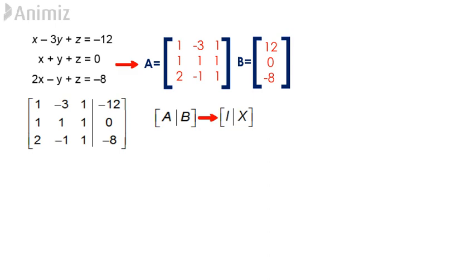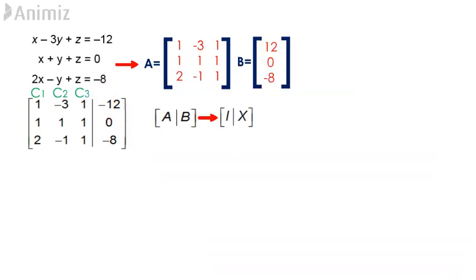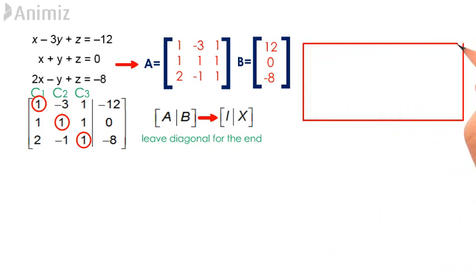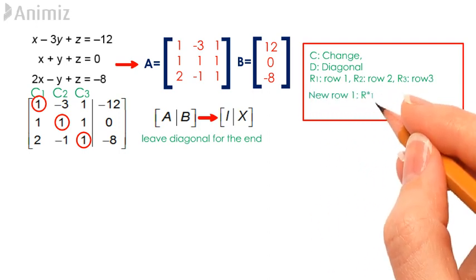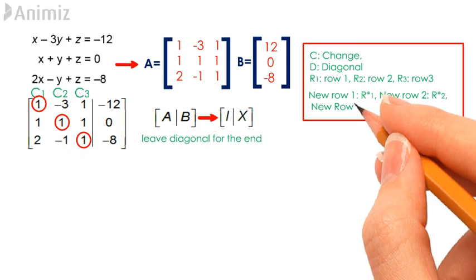So, [A|B] to [I|x]. Let us refer to the respective columns — column 1, column 2, and column 3 — when creating equations for the new rows. Remember to leave the procedure involving matrix diagonals for the end. The letter C denotes the element we are changing, whereas the letter D denotes the diagonal element. R1, R2, and R3 represent rows 1, 2, and 3. New rows are written as R1*, R2*, and R3* with an asterisk symbol.